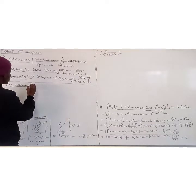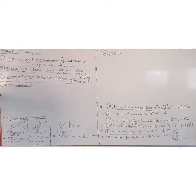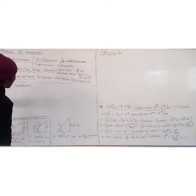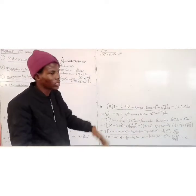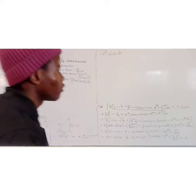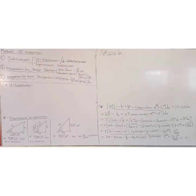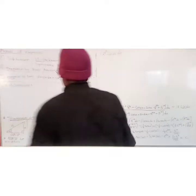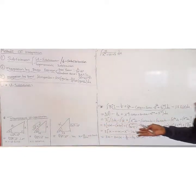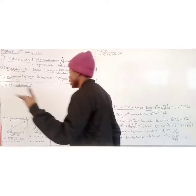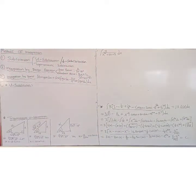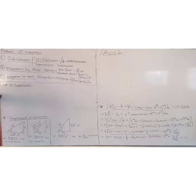Under u-substitution, we are substituting with a variable. Our integral may be given in the form of a quotient of two functions or a product of two functions. We just have to identify the relationship between the derivative of one function and the other function, depending on what type of form we're given.